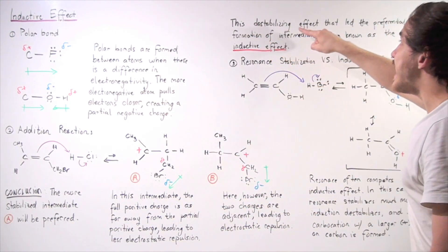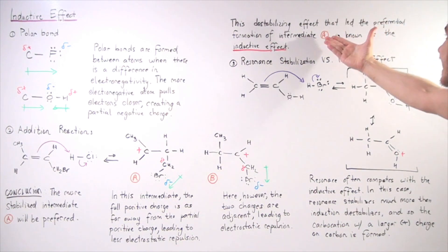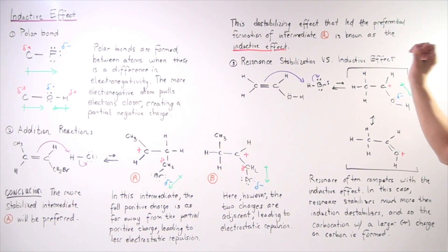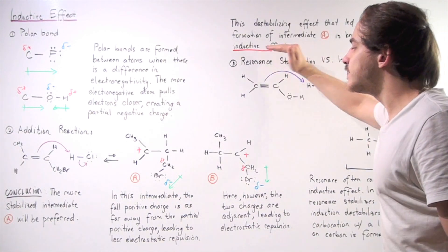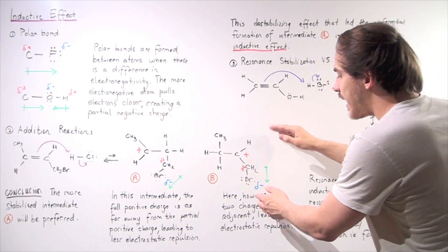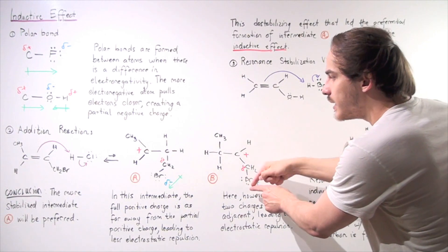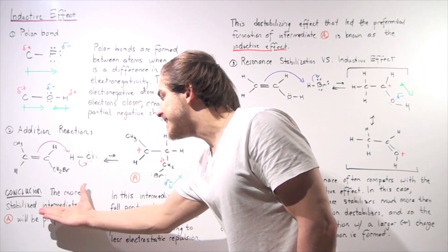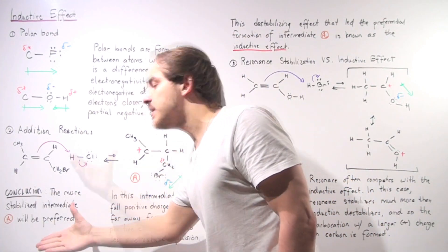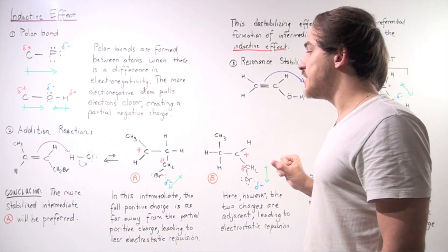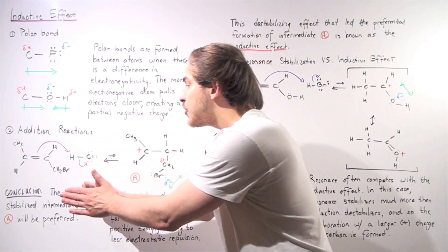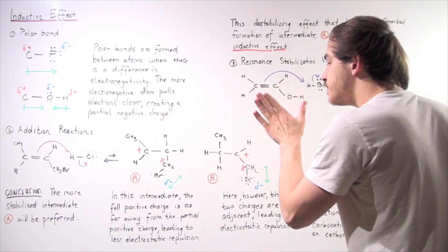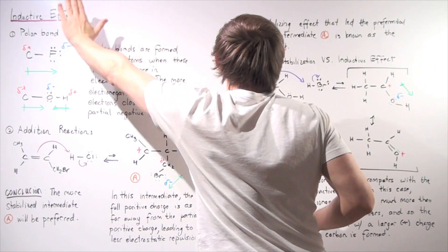This destabilizing effect, which leads to the preferential formation of intermediate A, is known as the inductive effect — specifically, the inductive effect of this polar bond. We conclude that the more stabilized intermediate A is preferred, so the reaction pathway taken leads to product A and not product B because of this inductive effect.